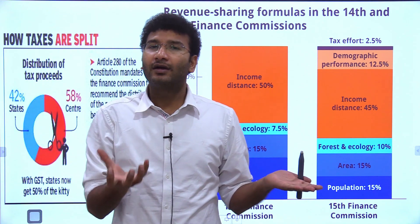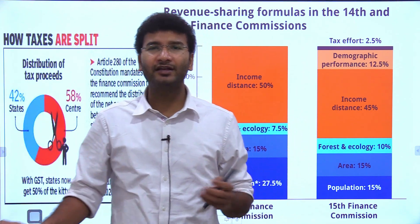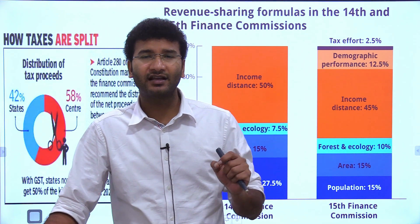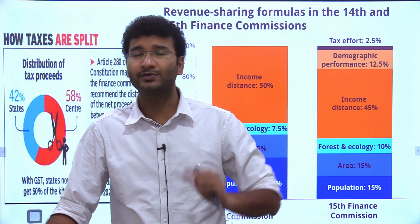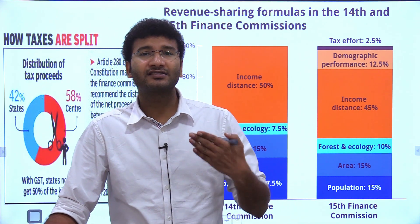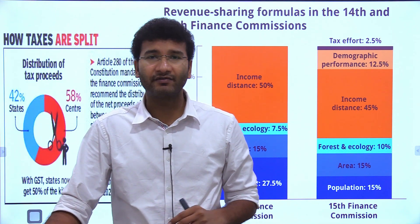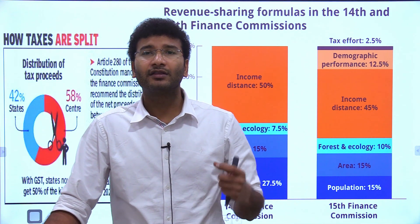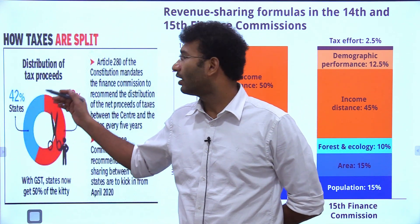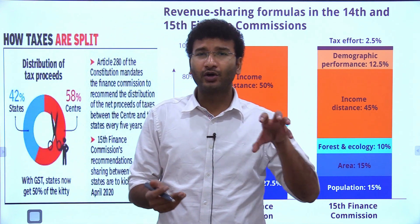Once the census data comes out, the Finance Commission uses the population data to devolve taxes. When you buy any product, it has direct and indirect taxes. The indirect taxes like SGST and CGST are collected and disbursed to states in a ratio of 42:58 — 42 rupees out of every 100 go to the states and 58 rupees are kept by the centre.